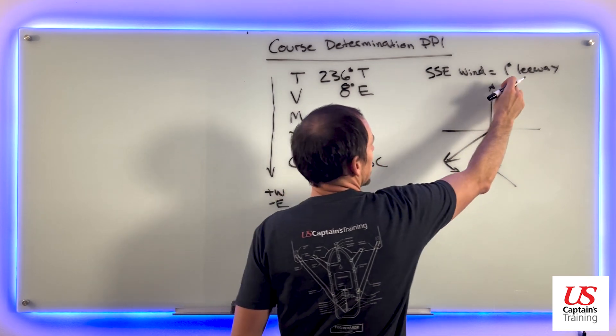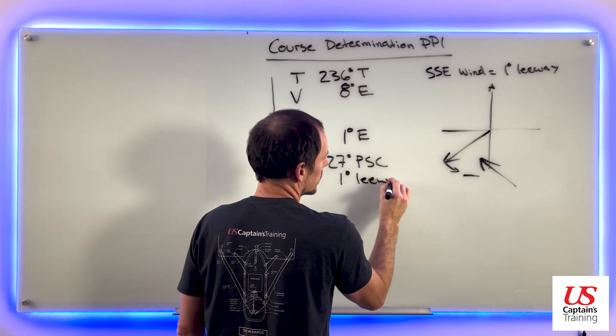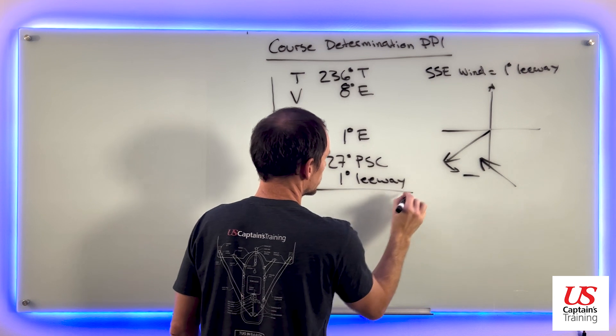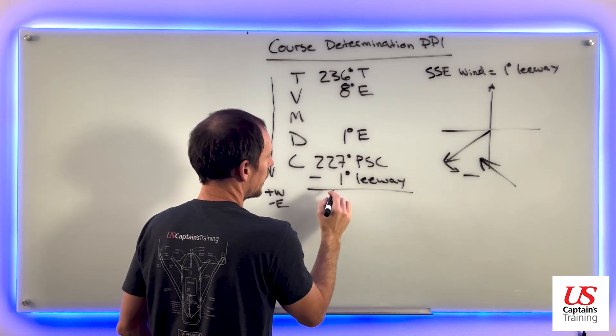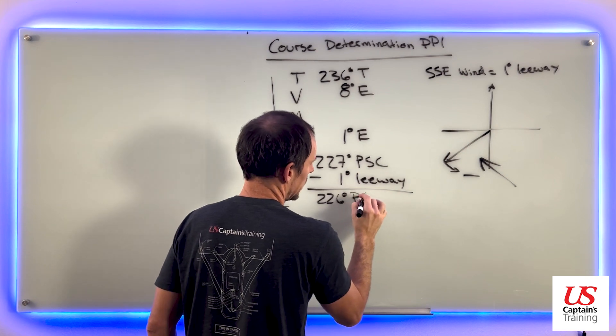We're going to subtract that 1 degree leeway, so minus 1 degree leeway. We're accounting for that leeway. 227 minus 1 is 226 degrees PSC.